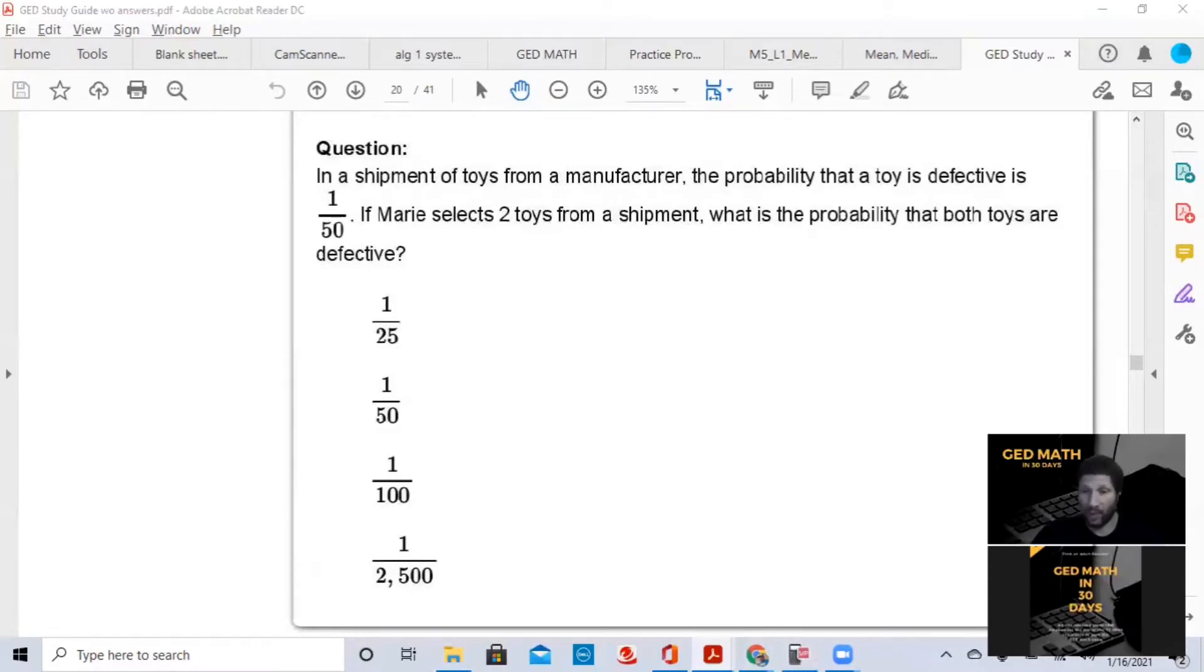If Mary selects two toys from the shipment, what is the probability? First of all, let's go over simple probability. They already gave us a simple probability in this problem. That means the chance of something happening over the whole.